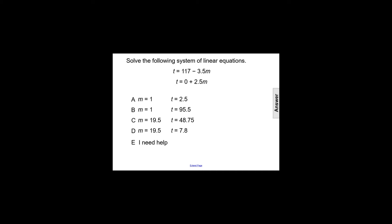Solve the following system of linear equations, the system being t equals 117 minus 3.5m, and t equals 0 plus 2.5m.